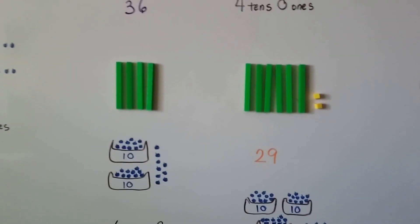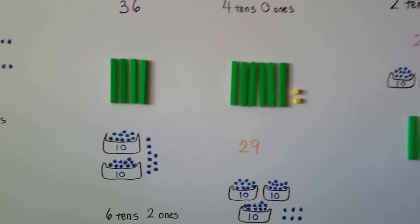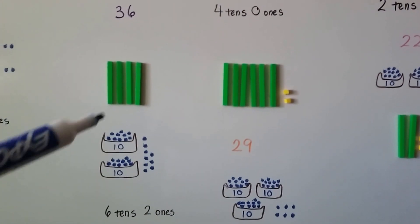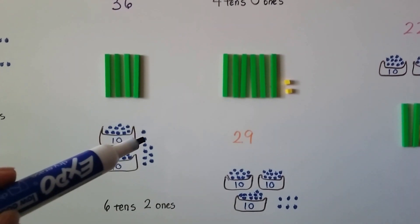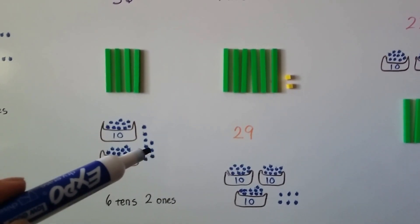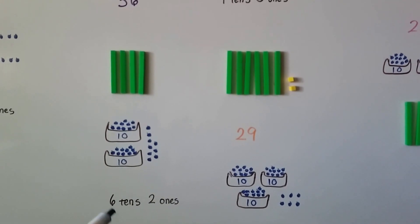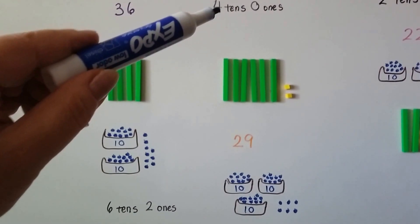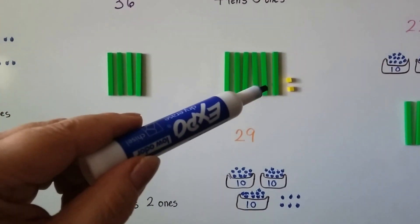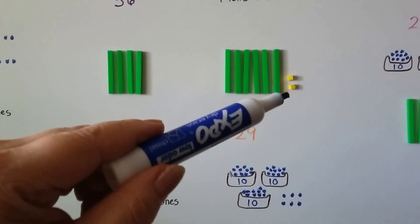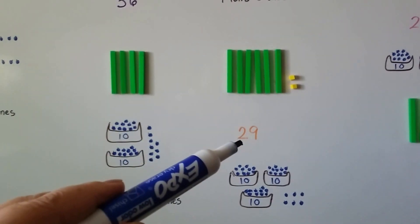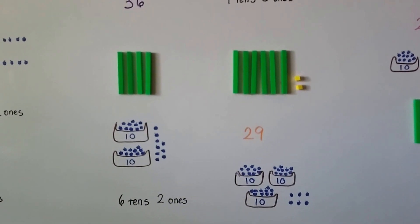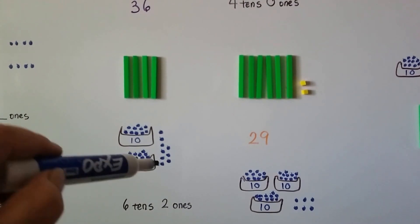Let me step back so you can see what we've got. We've got a 36. We've got four longs of ten. We've got two tens and one, two, three, four, five, six, seven, eight, nine ones. We have six tens and two ones on this side. We have four tens and zero ones, and we have one, two, three, four, five, six longs of ten with two ones. We have a twenty-nine and we have three tens and six ones.